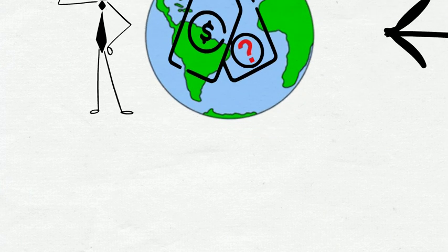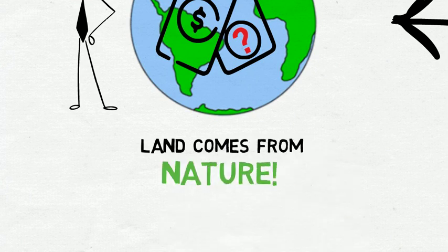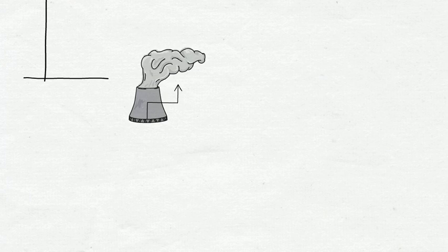Just like air and water, land comes from nature, and we all need it to survive. So, and here's the big question, could we break this cycle of dependence on unsustainable market growth by having a different approach to land?